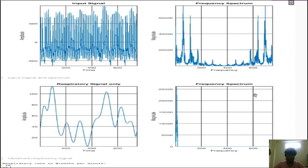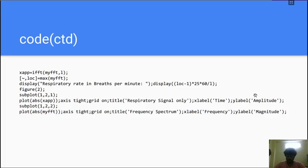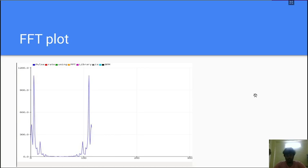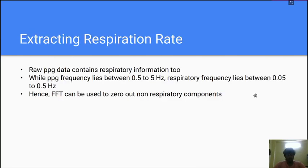Which is what we're getting is the respiration rate. From before this, from this, in this plot, we are getting 16 beats per minute as a respiration rate.